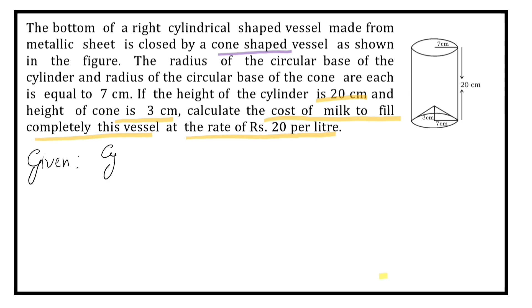Two solids are given here: cylinder and cone. Radius of cone and cylinder are both same. What is it? 7 cm.